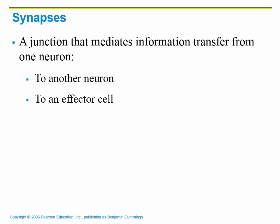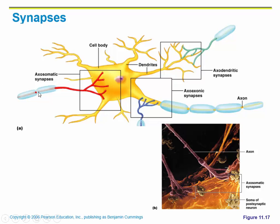A synapse is formed when one neuron is communicating with another neuron or another type of cell. This is what a synapse would look like — we've got all kinds of different neurons communicating with this one neuron in the middle, with the cell body shown. The axon of this neuron is communicating at all of these points with the dendrites. This one's communicating directly with the cell body, and this one's communicating with the axon.